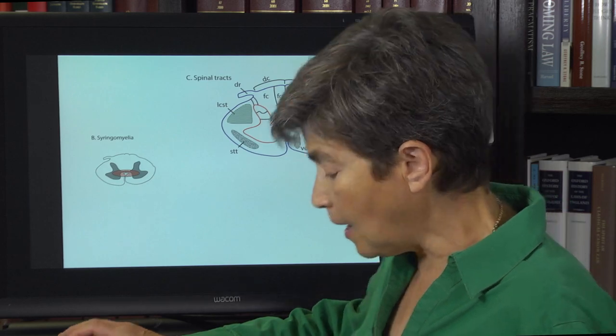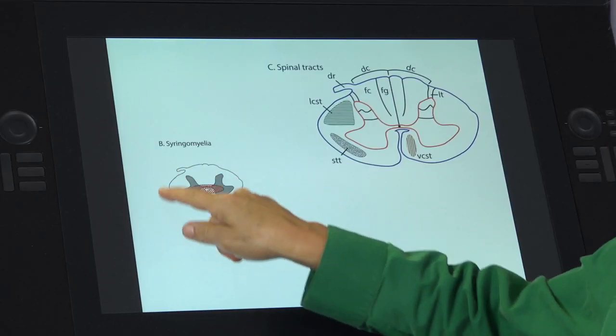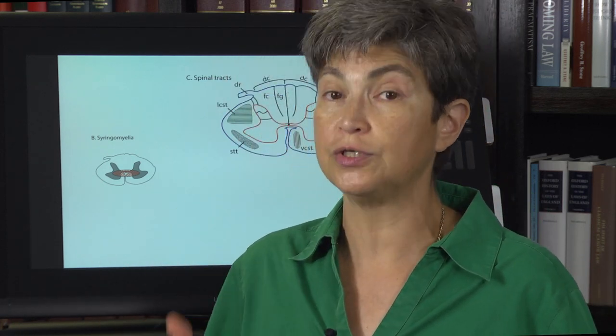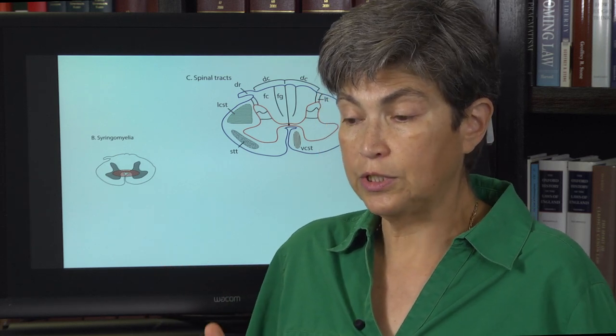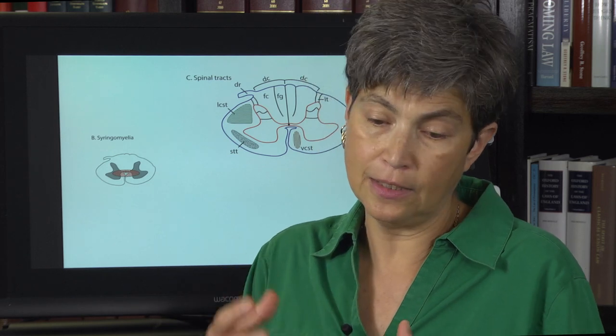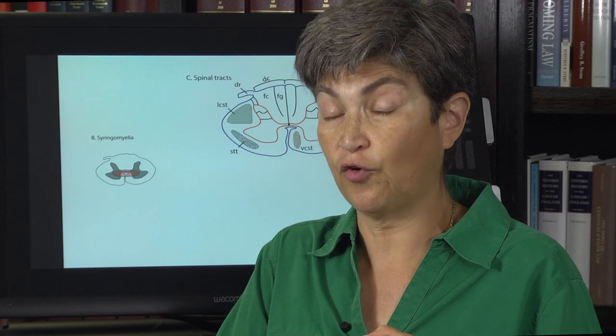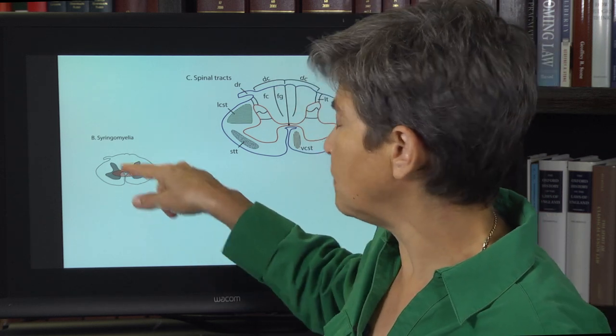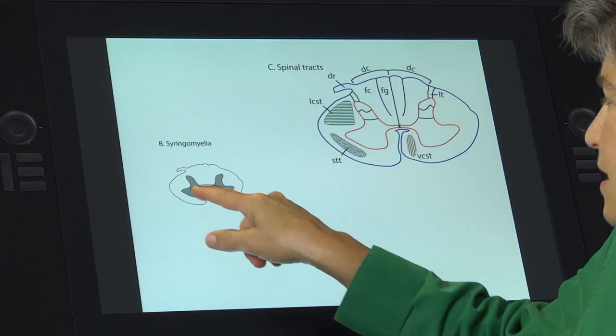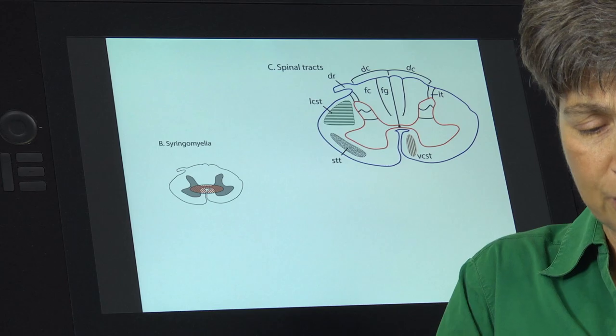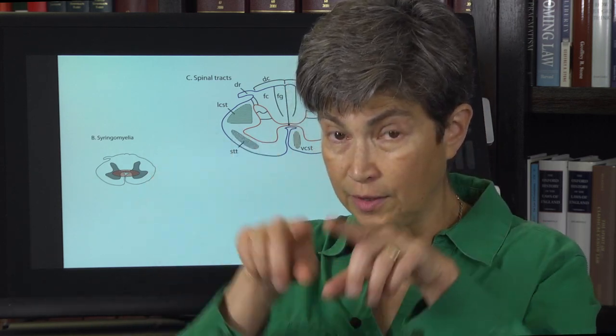Syringomyelia — I've shown this as it occurs in the cervical cord, because in fact it nearly always occurs in the cervical cord. One typical reason why it may occur is as a late consequence of a Chiari malformation, in which the cerebellum pushes out a little bit through the foramen magnum and can make a syrinx — a cyst — that occupies the central region coming out from the central canal. So syringomyelia is basically a syrinx that emanates from the site of the central canal.